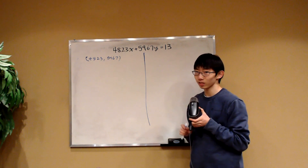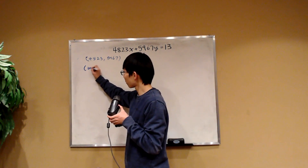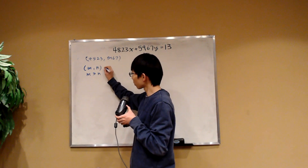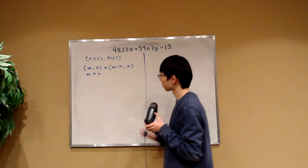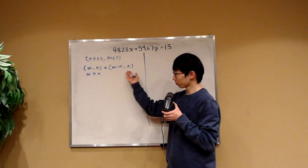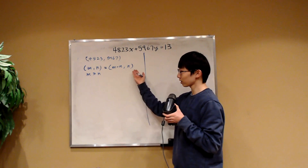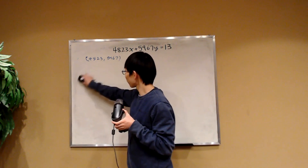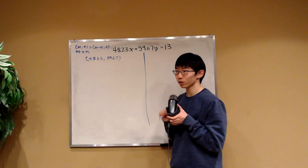The Euclidean algorithm states that the greatest common factor of m and n — if m is greater than n — is also equal to the greatest common factor of m minus n and n. Try to think of why this is true. You can see that this is much easier than factorizing, so let's use the Euclidean algorithm to compute our GCD.